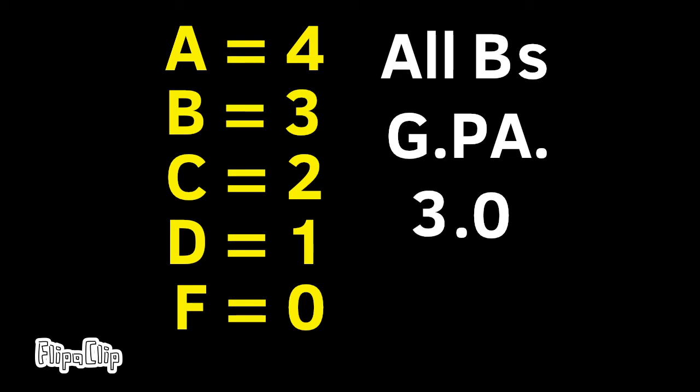If you earned straight B's, your GPA would be 3.0. Straight C's would be 2.0, straight D's would be 1.0, and straight F's would be a 0.0 grade point average.